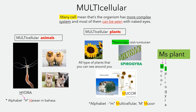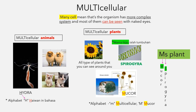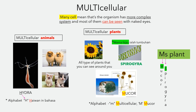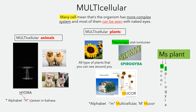Multicellular plants are all types of plants you can see around you. The smaller multicellular plants are spirogyra and mucor. Remember, hydra is multicellular under the animal kingdom — H stands for 'Haiwan' in Bahasa. For spirogyra and mucor, we use 'meat plant': M stands for mucor, M stands for multicellular, and S stands for spirogyra.